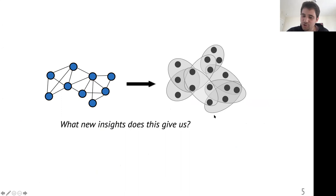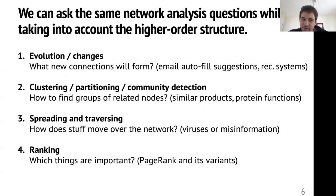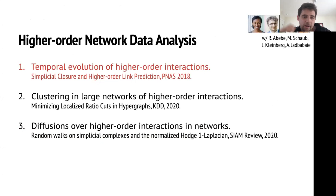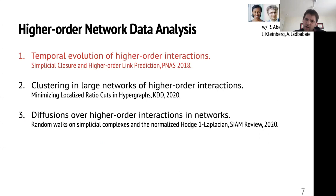So what I'm going to do today is go from this formalism of graphs or pairwise connections to other formalisms that take into account what I call higher-order interactions — multiple entities that interact at the same time. I'll draw pictures where circles connect multiple nodes at a time. We can ask the same types of questions as before: how things will evolve, what are important groups of nodes, how things spread, and what's important. In today's talk I'll go over three methodologies I've been working on over the past couple of years, spanning more applied as well as more theoretical work.